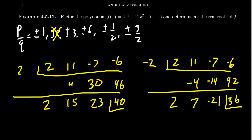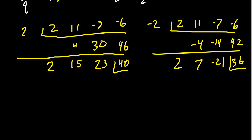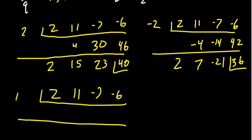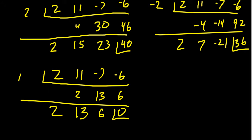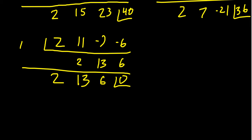So we can try trial and error until we find a root that works. Let's try x = 1 — honestly, 1 is usually the one I start with because the arithmetic is simple. With coefficients 2, 11, −7, −6: bring down the 2; 2×1 = 2, plus 11 is 13; 13×1 = 13, minus 7 is 6; 6×1 = 6, minus 6 is 0. The remainder is 0, so x = 1 is a root, and x − 1 is a factor of the polynomial.